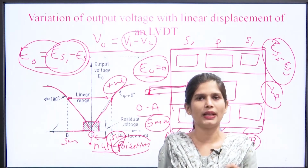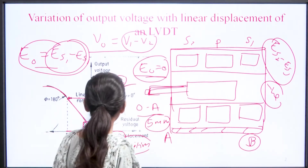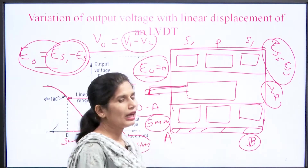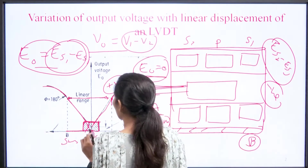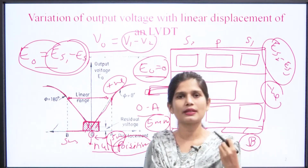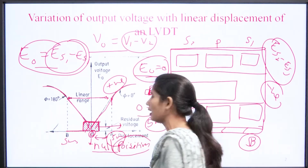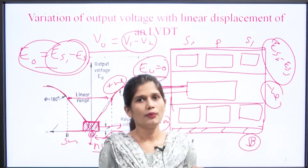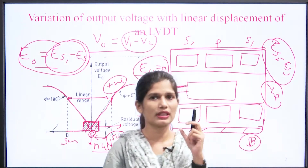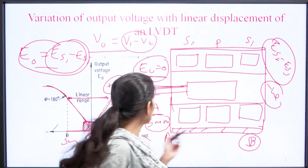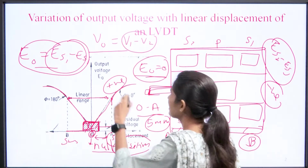We have seen that the LVDT gives output voltage in proportion to the displacement value in several cases. At null position, output is zero. One more thing to note: at null position ideally the voltage is zero, but practically there is some amount of voltage present — this is called the residual voltage. This residual voltage occurs because of harmonics present in the input supply.